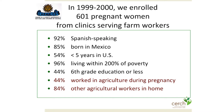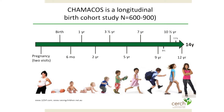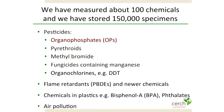CHAMACOS is a longitudinal birth cohort study. We followed the mothers during pregnancy and the children at birth, six months, one year, two years, three and a half years, five, seven, nine years, then every nine months from nine to twelve and three-quarters years. They are now 14 years old — we just finished the 14-year assessment and are about to start the 16-year assessment. When the children were nine, we enrolled a second cohort of nine-year-olds from the valley. We've measured about 100 different chemicals, with the potential for many more, and have about 150,000 stored samples. Today I'm only going to talk about organophosphate pesticides.